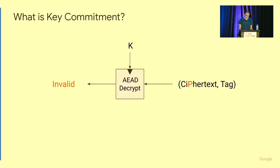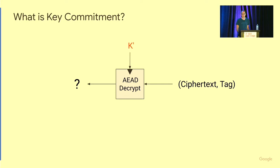What we are looking at now is not changing the ciphertext, but changing the key. It's unclear what happens then. The standard security notions like CCA2 don't basically cover what happens in this case, because we're not violating the security notion of authenticated encryption — we're looking at something different. Surprisingly, you might intuitively think if you decrypt the ciphertext with the wrong key, it should output invalid. But this is not always the case.